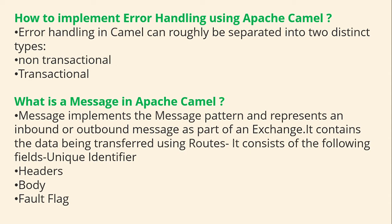What is messaging in Apache Camel? A message implements the message pattern and represents an inbound or outbound message as part of the exchange. It contains the data being transferred using routes. It consists of the following fields: unique identifier, headers, body, and fault tag.